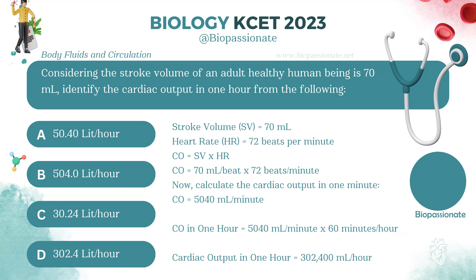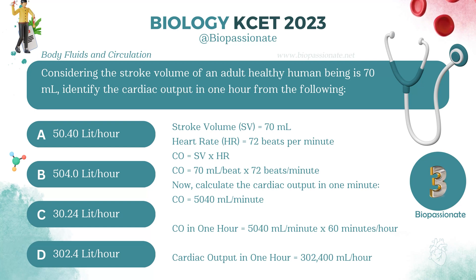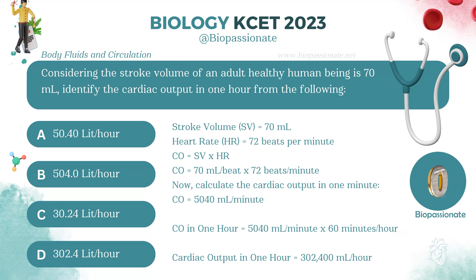Considering the stroke volume of an adult healthy human being is 70 ml, identify the cardiac output in one heartbeat from the following. Answer: Option 4.